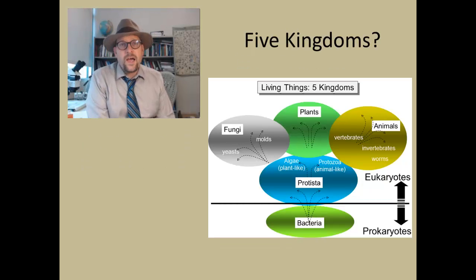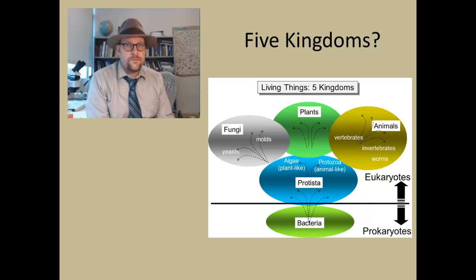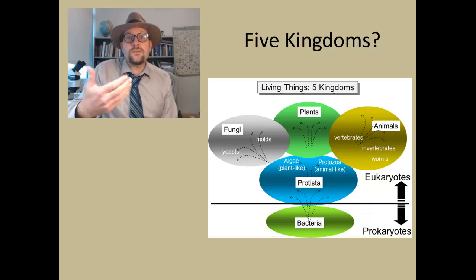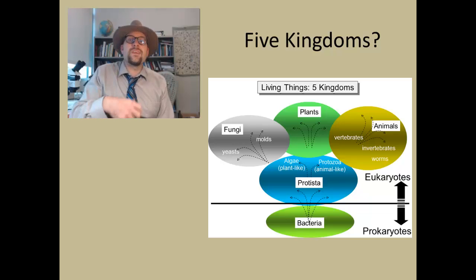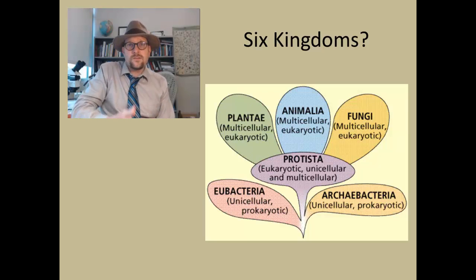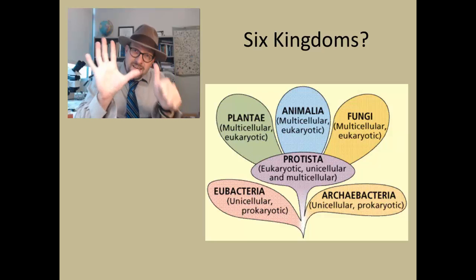The old system of five kingdoms of life might have been something you were introduced to in high school biology. There are the animals, the plants, the fungi, the protists — these are the single-celled organisms — and the bacteria, so five kingdoms. Hence all eukaryotic single-celled organisms are placed within a single kingdom. More recently, folks studying bacteria decided to split bacteria into two kingdoms: the eubacteria and the archaeobacteria or archaea, giving us six kingdoms now.